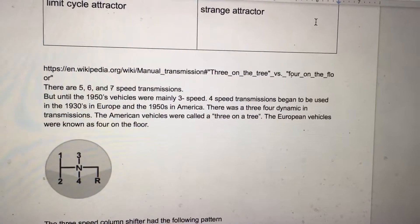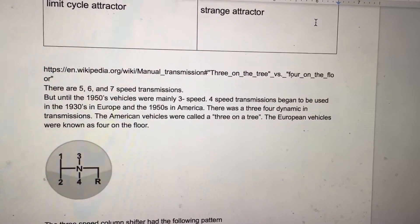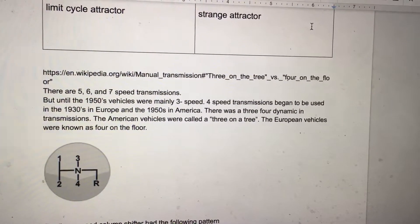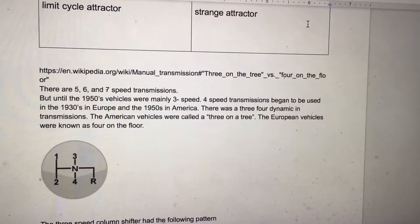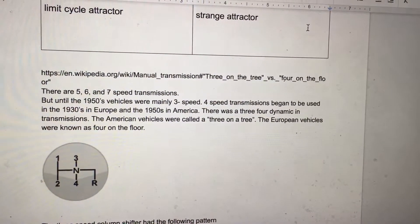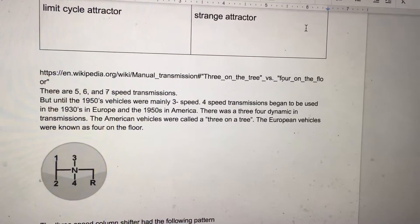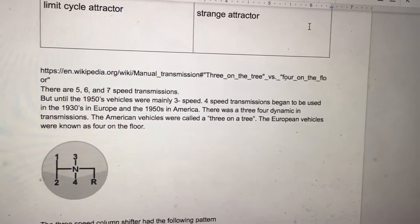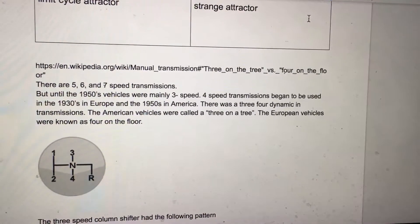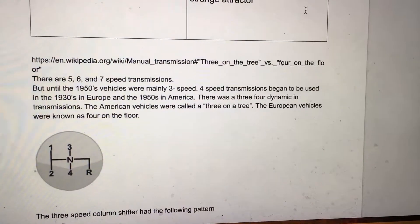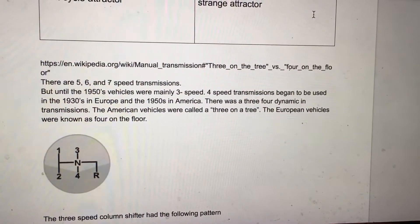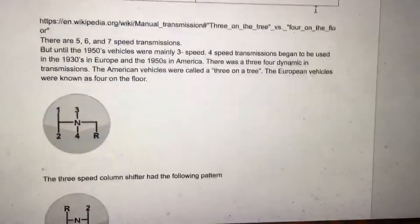There are five, six, and seven speed transmissions, but until the 1950s vehicles were mainly three-speed. Four-speed transmissions began to be used in the 1930s in Europe and in the 1950s in America. There was a three-four dynamic in transmissions. American vehicles were called 'three on a tree,' while European vehicles were known as 'four on the floor.'